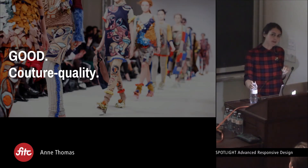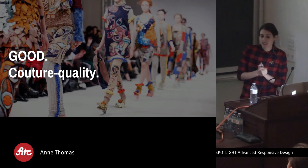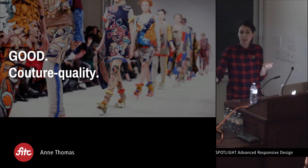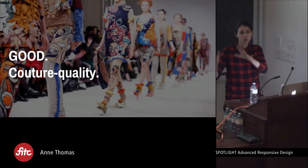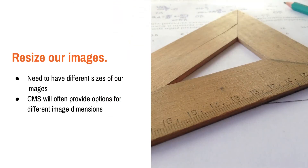Wouldn't it be amazing if we had a way to download an image to our site that was specific to a user's device? If I'm looking at something on my phone, only the small image downloads. If I look at something on a large laptop, I get the higher quality version of that image. I'm not going to be downloading that huge image onto the phone. So how do we achieve this? First, we need to make sure that we actually have these different sizes of images — this isn't something that just happens magically out of the box.